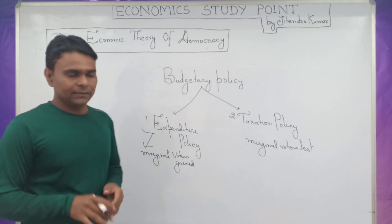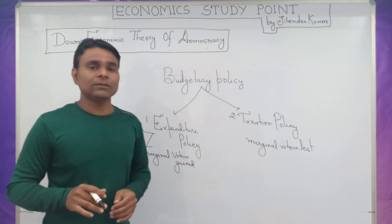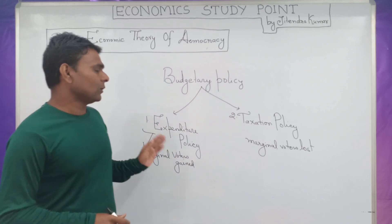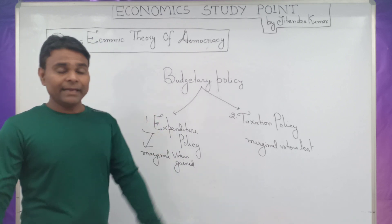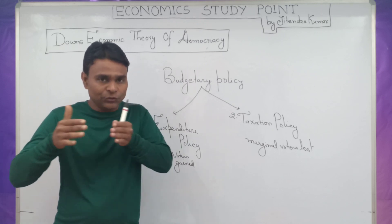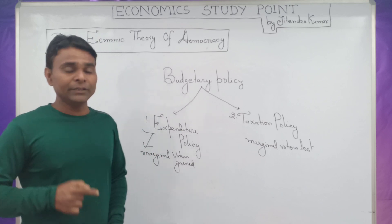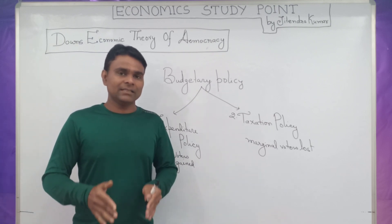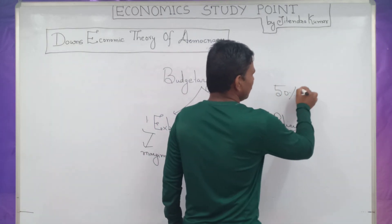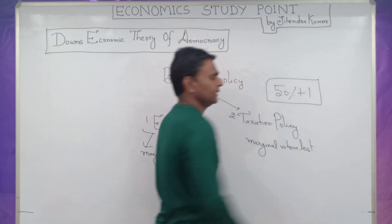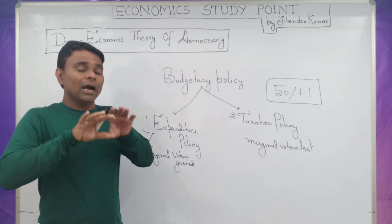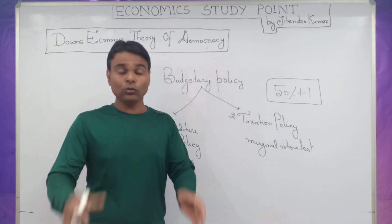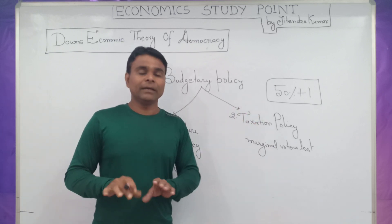In a democratic country, maximization of votes is not the necessary and sufficient condition for winning the election. For example, if there is a direct democracy where the ruling party has a secure majority vote, in a two-party system a political party needs 50% plus one vote to form a government. In a multi-party system, a political party can form a government even by securing less than 50% of the vote, but it depends upon the rules.